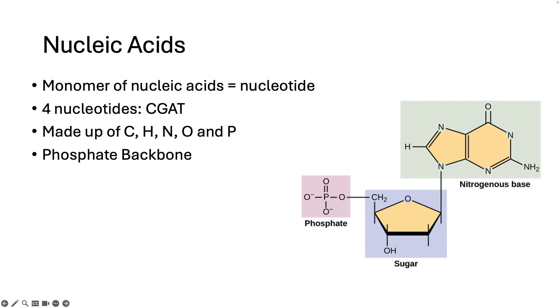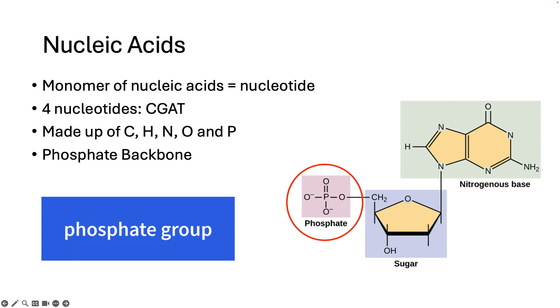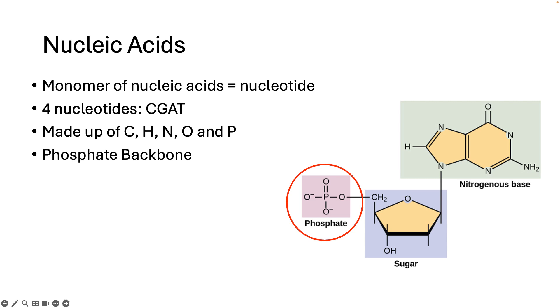You can see that the phosphorus atom, the P, is surrounded by oxygen atoms which have charges. This whole structure is called a phosphate group. So all five of those atoms, four oxygens and one phosphorus, is a phosphate group. And you're going to be seeing phosphate groups a lot in this class, so pay attention to what it looks like.